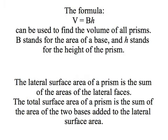The formula volume equals BH can be used to find the volume of all prisms. Capital B stands for the area of a base and H stands for the height of the prism. In this lesson we've only looked at right prisms, where the lateral faces are all perpendicular to the bases, but this formula works for all prisms, including those where the lateral faces are not perpendicular to the bases. The lateral surface area of a prism is the sum of the areas of the lateral faces, and the total surface area is the sum of the two bases' areas added to the lateral surface area.